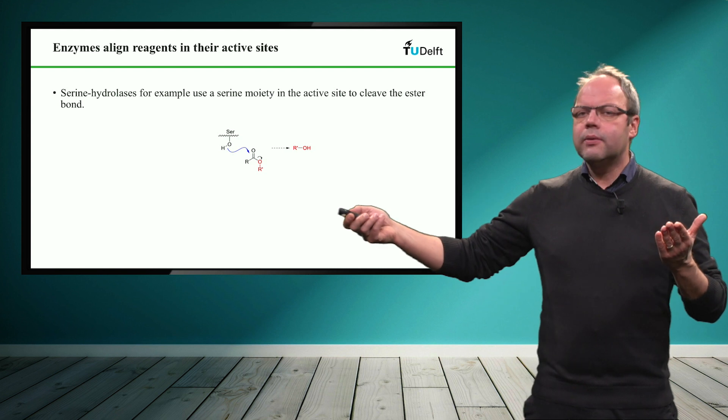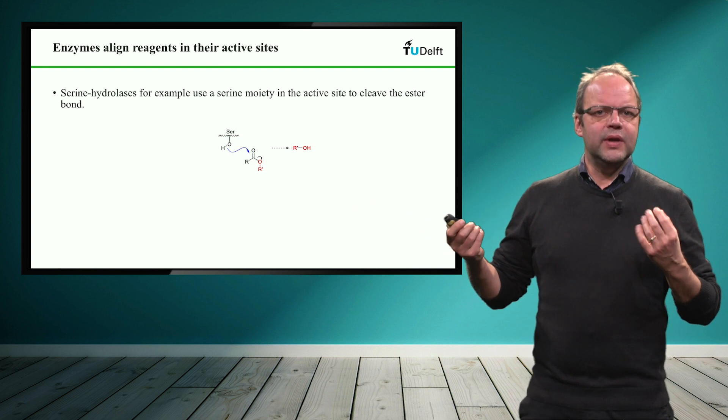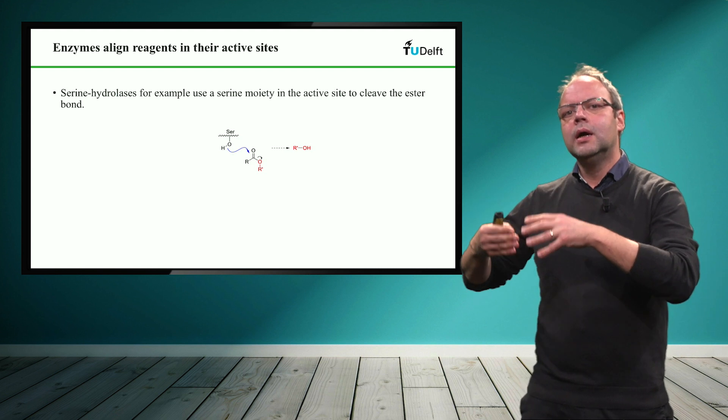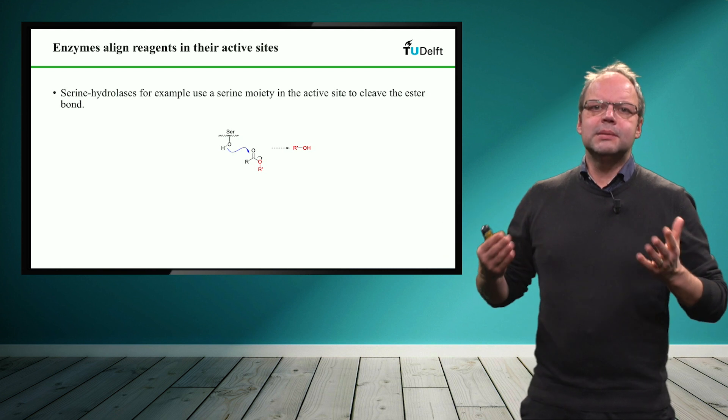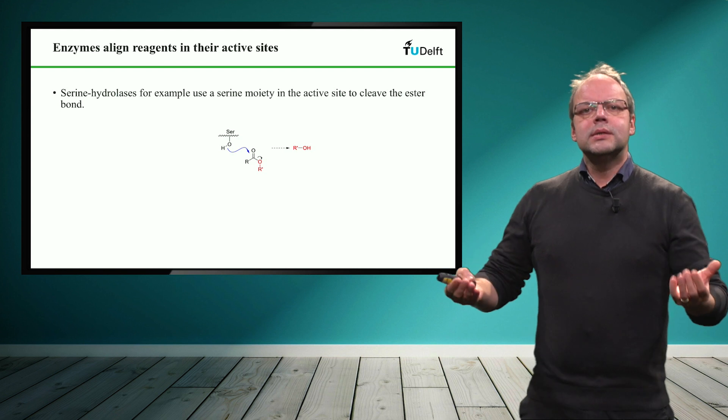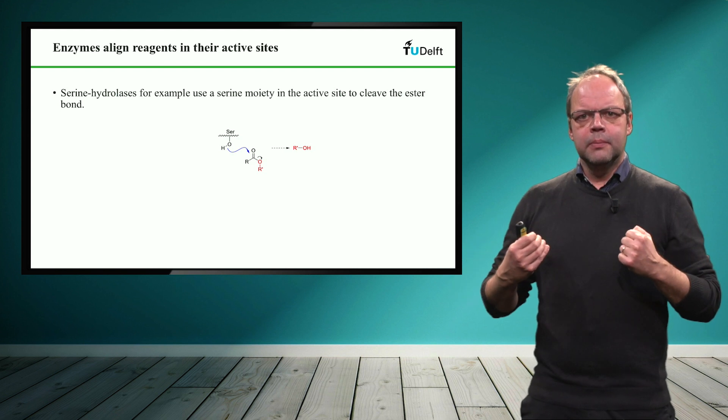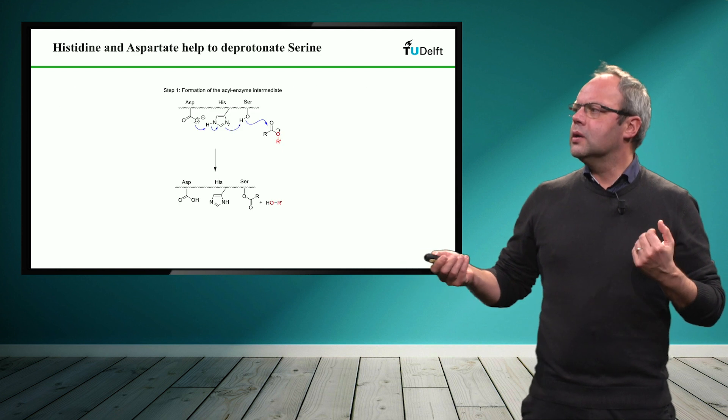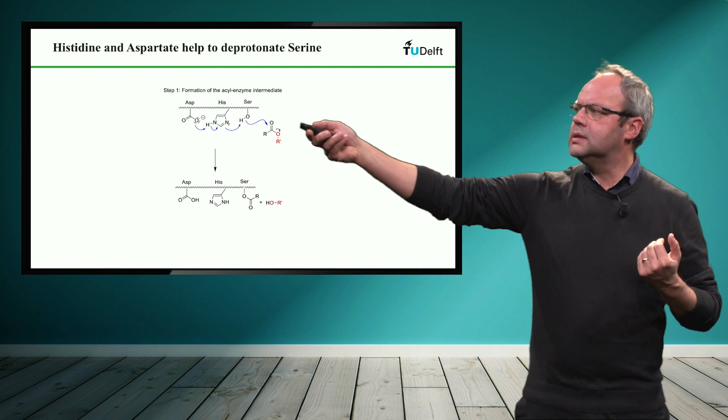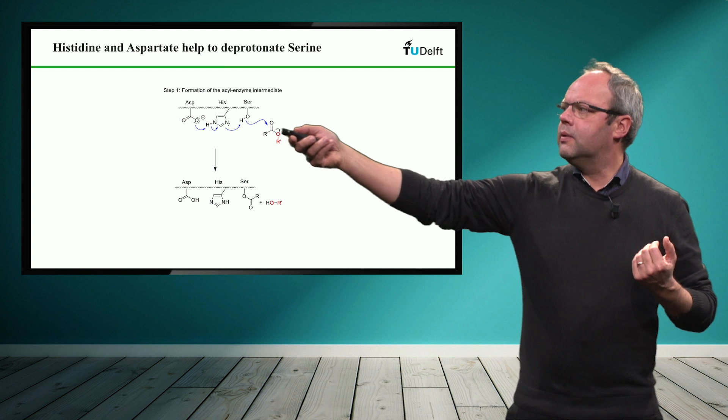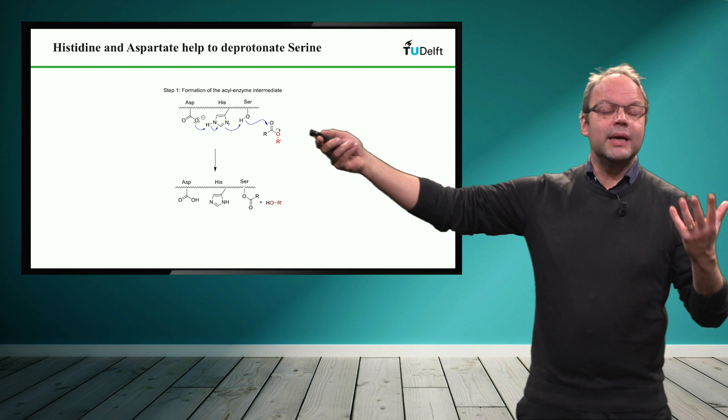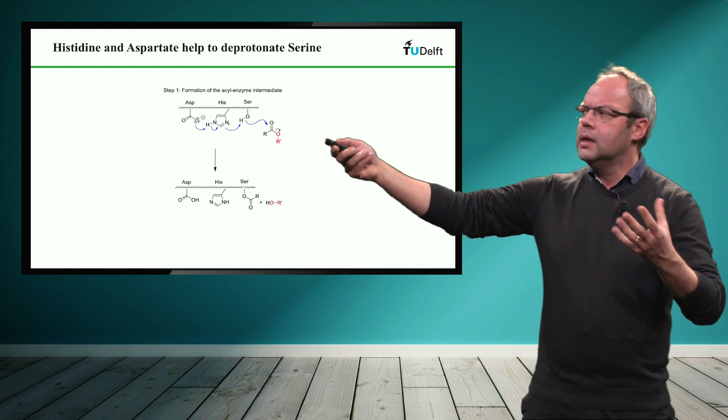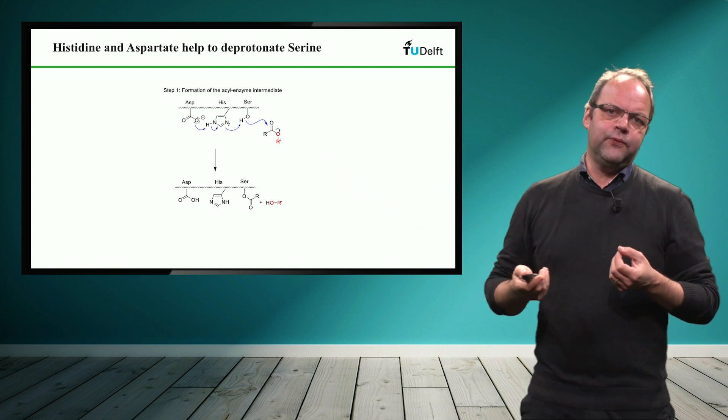Unfortunately, serine itself is not very nucleophilic. So the tendency of serine to nucleophilically attack at the carbonyl group is practically zero. So in order to increase the activity of the serine, the enzymes use the so-called catalytic triad. And this is what you see here. So next to the serine there is a histidine which basically acts as a base. So it abstracts a proton from the serine.